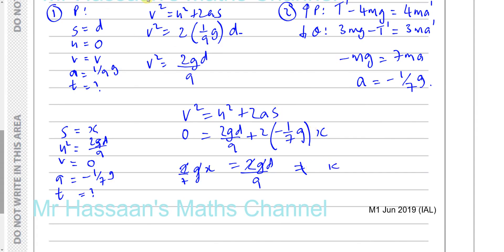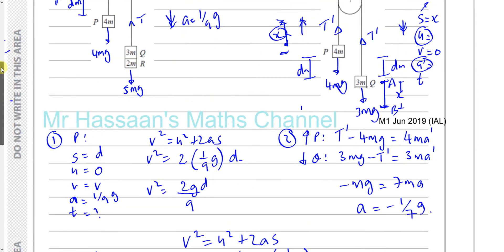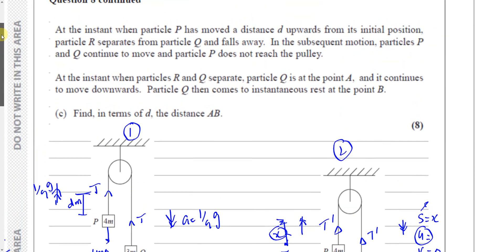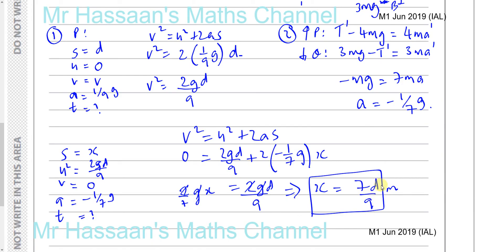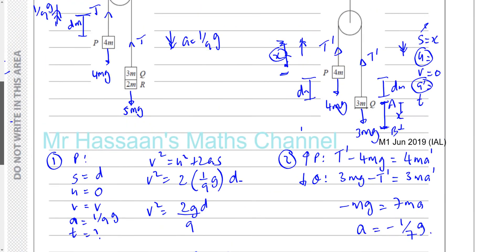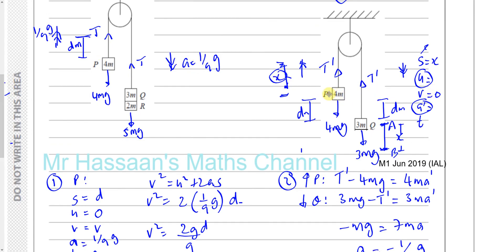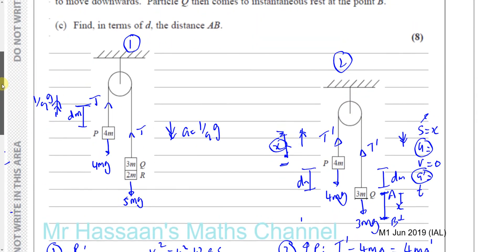So X is equal to 7D/9, and that is our answer in terms of D — the distance AB is 7D/9 meters. The distance that P moved up is the same as the distance Q moved down, so it doesn't matter whether you consider Q or P, you get the same answer. That completes part C of this question. Thank you for watching.